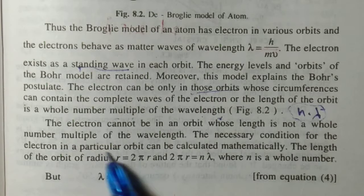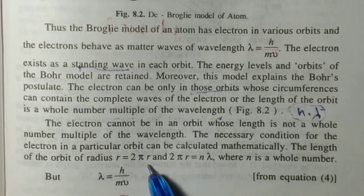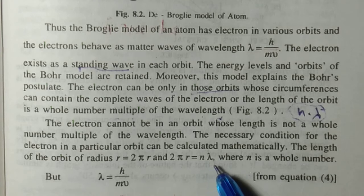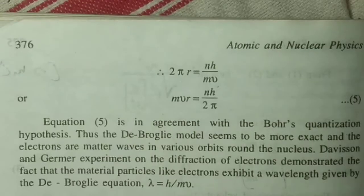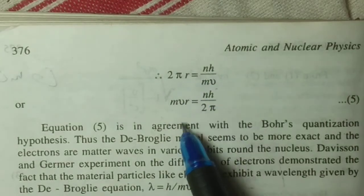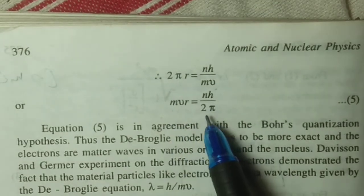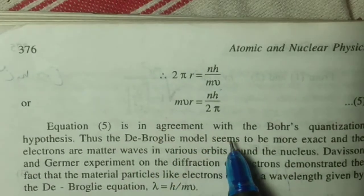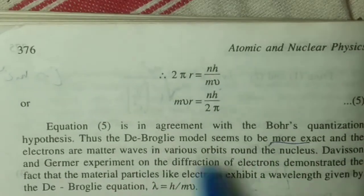From this concept, the necessary condition for the electron in a particular orbit can be calculated mathematically. The length of the orbit of radius r is 2πr = nλ, where n is a whole number and λ = h/mv. After equating, we get mvr = nh/2π. This is also known as Bohr's second postulate.